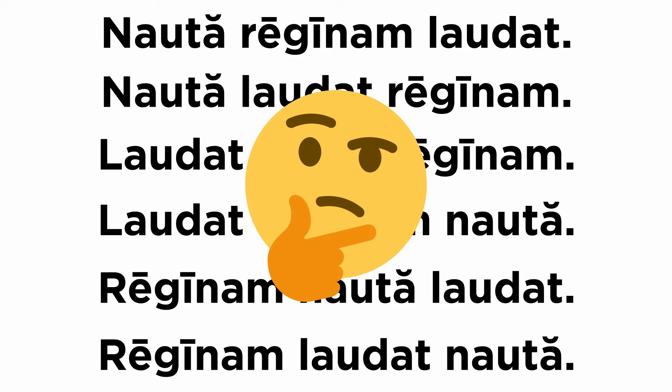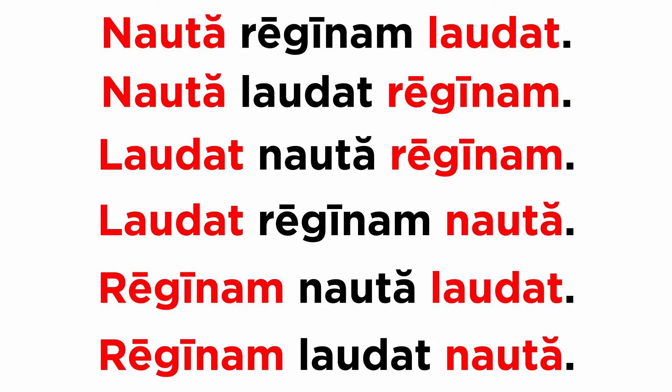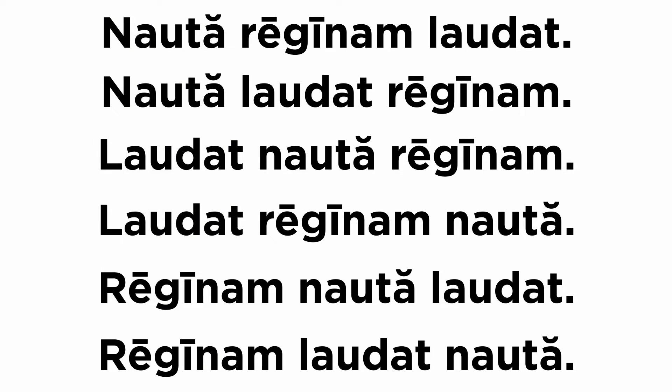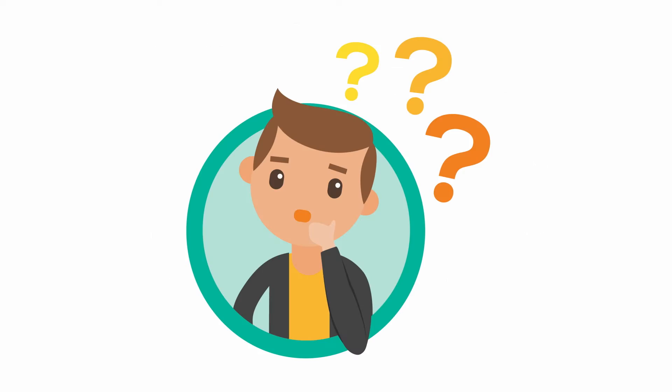If you're wondering what the point of all this variation might be: since the most stressed words in Latin are the first and the last, moving the words around simply shifts the emphasis from the subject to the verb or to the object, which can add subtext to the sentence.